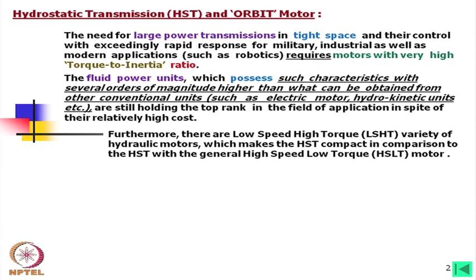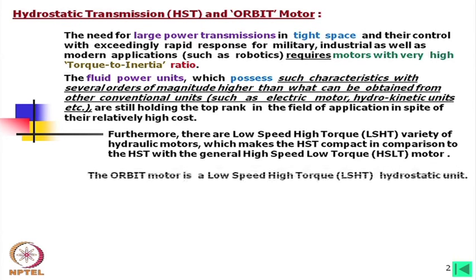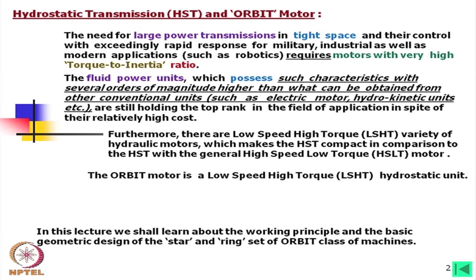Furthermore, there are low speed high torque varieties of hydraulic motors which make the HST very compact in comparison to the HST with the general high speed low torque HST motor. The orbit motor is a low speed high torque hydrostatic unit. In this lecture, we shall learn about the working principle and the basic geometric design of the star and ring set of orbit class of machines.